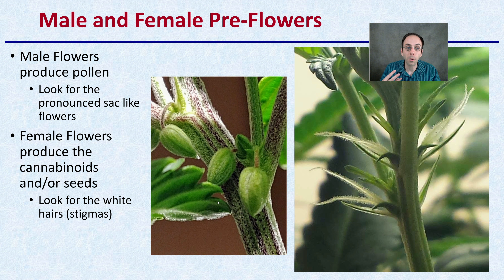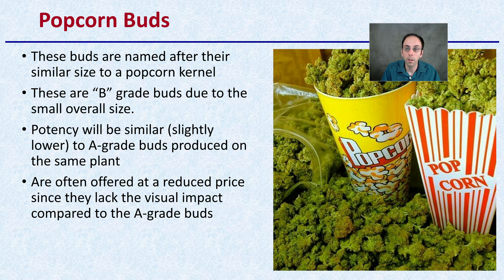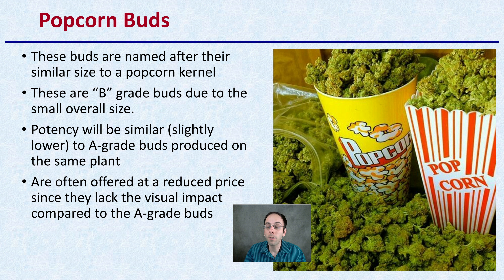Then we get to male and female pre-flowers. The male flowers produce pollen — you can see those right here. Look for these pronounced sack-like flower structures. In comparison, the female pre-flowers will ultimately produce the cannabinoids, or seeds if they get pollinated. You want to look for fine, wispy white hairs called the stigmas. Think of 'sticky stigmas' — these fine hairs are responsible for capturing pollen for the plant.